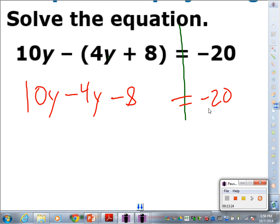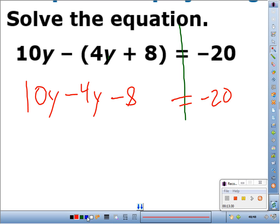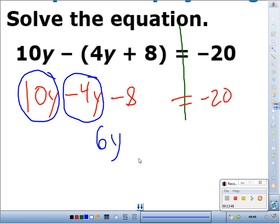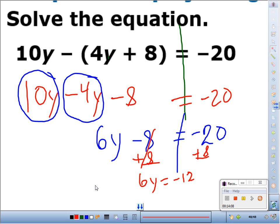Okay. Help me from there, Isaac. Go. Combine like terms. What is 10 minus 4y? 6y. Bring down the negative 8 equals to the negative 20. From there. Julia, what do I do? Add 8 to both sides. Add 8 to both sides. Thank you, Julia. This is 6y equals negative 12. What's my last step? Julia. Divide by 6 on both sides. Y equals negative 2. Hands up if you got y equals negative 2. That is correct.